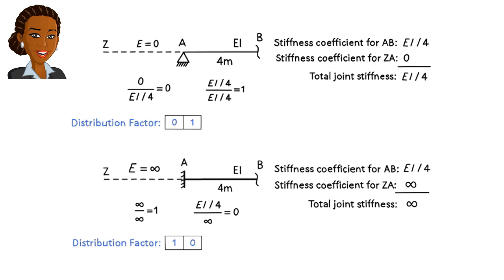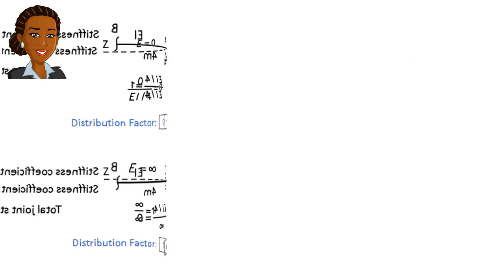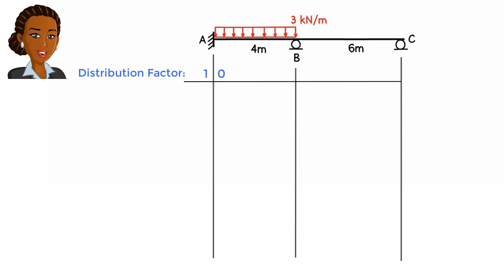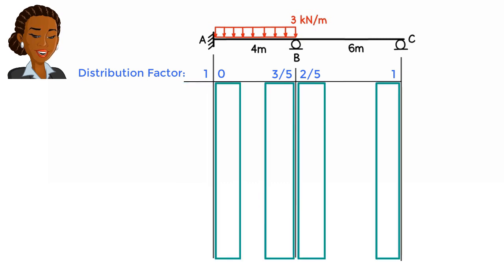Let's see how the moment distribution process works for a continuous beam with a fixed support. Consider this beam. Here are the distribution factors for the joints. Note that here the table has one additional column, the very first column. This column gives us the moment at the right end of the imaginary element. The second through fifth columns are for determining the end moment for real members.